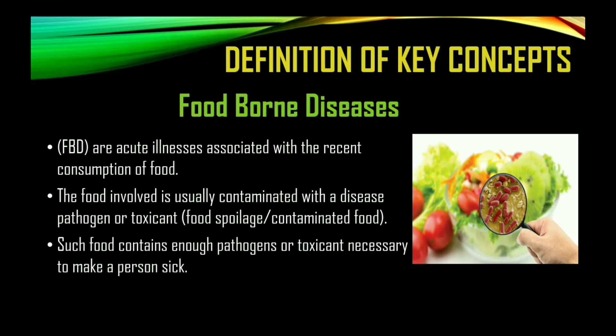Foodborne diseases, or foodborne illnesses, are acute illnesses associated with the recent consumption of food. When we speak of acute illnesses, we mean those that last for a short period of time. The food involved is usually contaminated with microbial pathogens or toxicants. Toxicants may be intentionally added, or microorganisms may produce toxins on the food, and when we eat that contaminated food, we get the illness called foodborne disease.